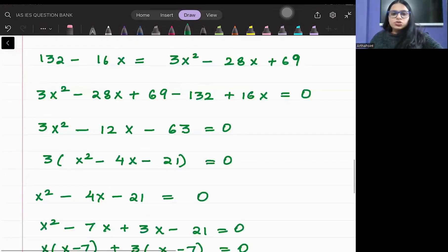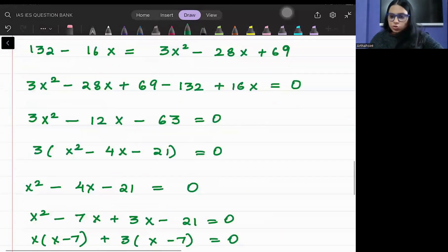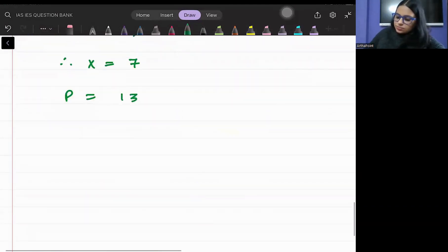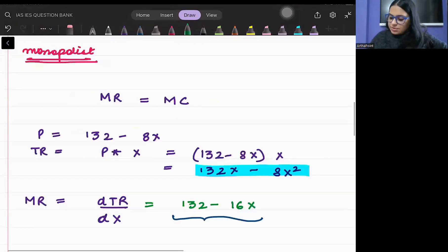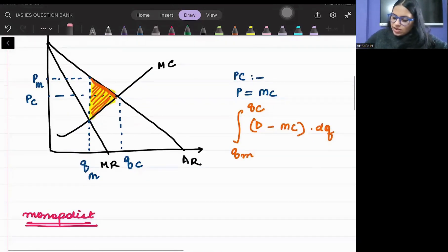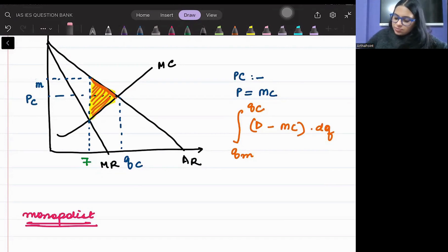Put this in the price function. So price kya tha beta? 132 minus 8X. So ye ho gaya 132 minus 56, ye ho jaega 76. This will be your price. So the price that you are getting in this case will be 76. So here we are getting QM, quantity sold by monopolist, ho gaya 7, and price at which it is selling is 76.